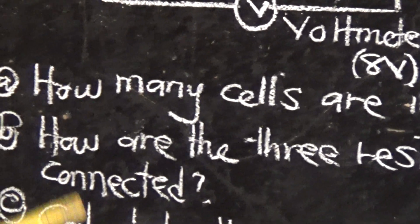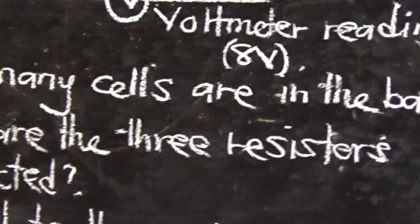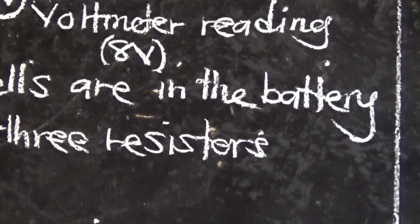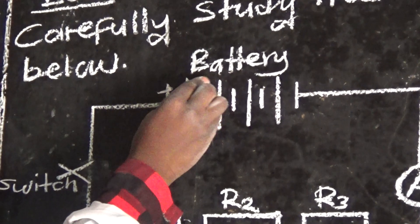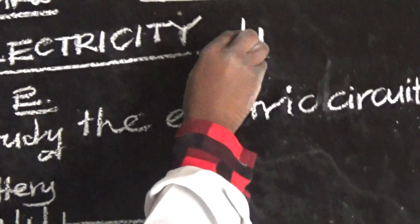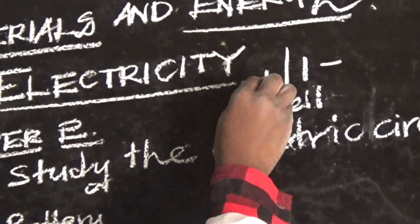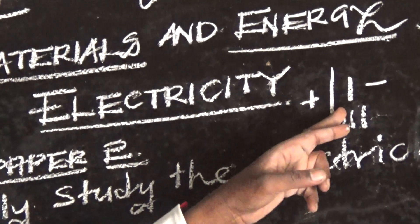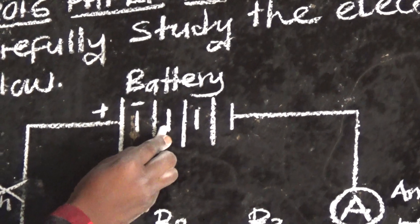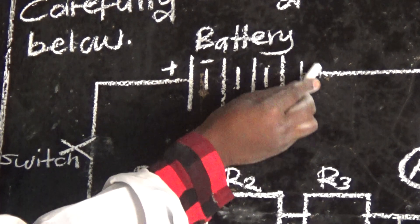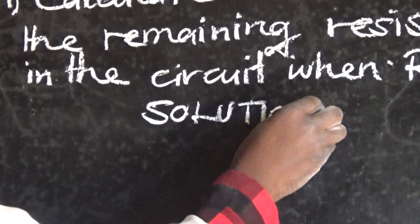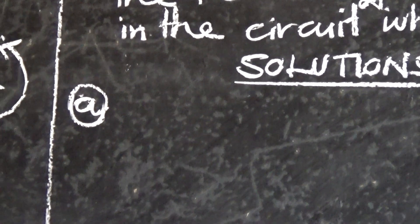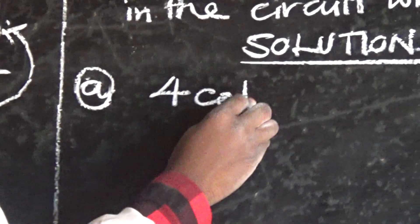Question (a): How many cells are in the battery? They want us to count the number of cells. The long line represents positive and the short line represents negative — together that is one cell. Counting: positive-negative one, two, three, four. So this battery has four cells. Answer: four cells.